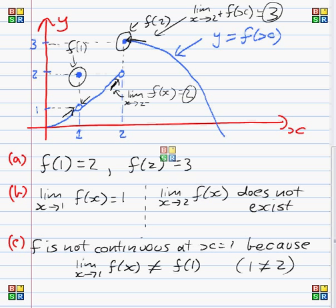So the reason that the function is not continuous at x equals 1 is because the value of the limit is not the same as the value of the function at that point.